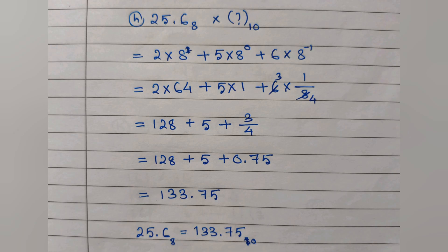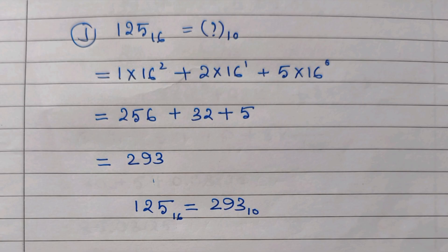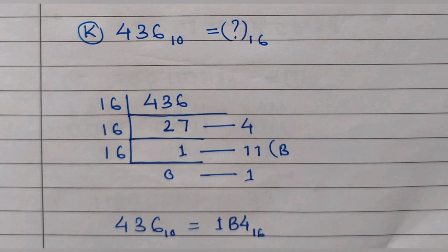To convert a hexadecimal number into decimal, we multiply the number by 16 raised to the power of the index of each digit — 0, 1, 2 — and multiply accordingly. Finally we get the answer 293, and the base will be 10 since we have converted into decimal.